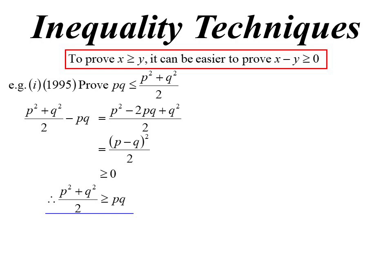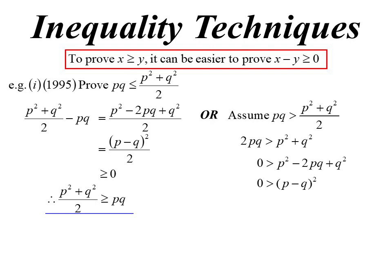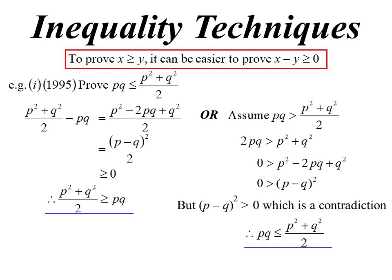Of course, if they don't tell us which way to do it, we can do it any way we like. If we wanted to use contradiction, we assume the reverse: PQ is greater than (P squared plus Q squared)/2. Multiplying both sides by 2 and moving the 2PQ over, we get 0 is greater than (P minus Q) squared. But (P minus Q) squared must always be greater than 0 because squares are positive — that's our contradiction. So PQ must be less than or equal to (P squared plus Q squared)/2.